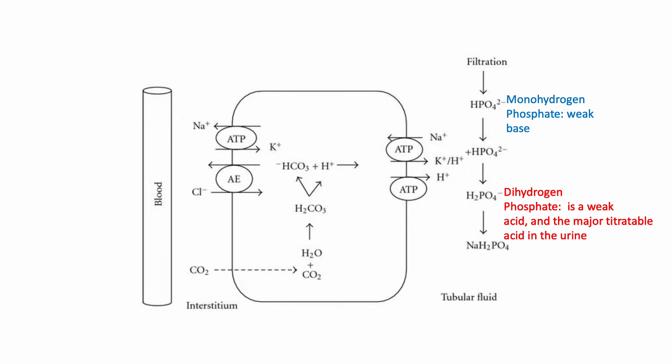This weak acid is the major titratable acid in the urine. "Titratable" means you can titrate it in the lab: if you take urine and add NaOH to raise it to a pH of 7.4, you can titrate and measure this acid. That amount equals the dihydrogen phosphate in the urine — this is why it's called titratable.